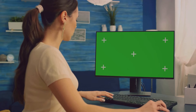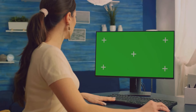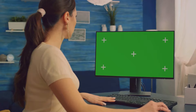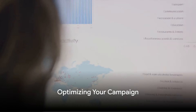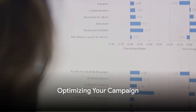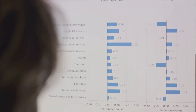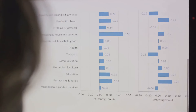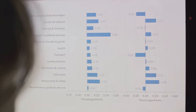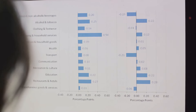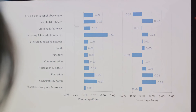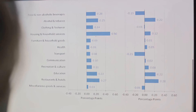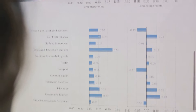Once you're happy with your ad, click on Save and Continue to launch your campaign. Optimizing your campaign is where the fun begins. Google Ads provides a wealth of data that you can use to improve your campaign. Monitor your campaign regularly, analyze the data, and make adjustments as necessary.